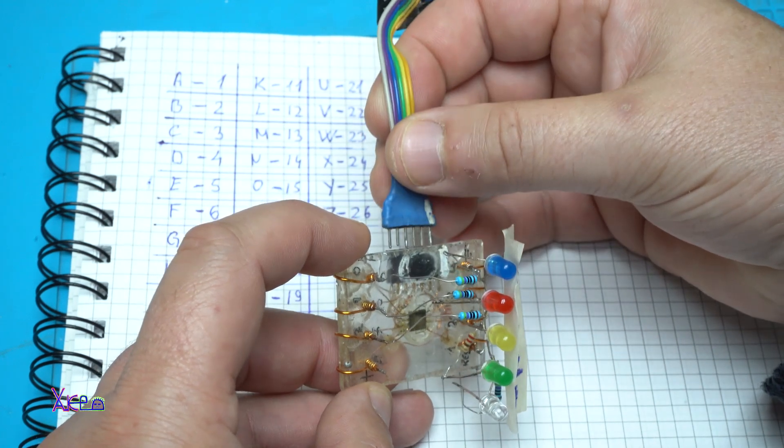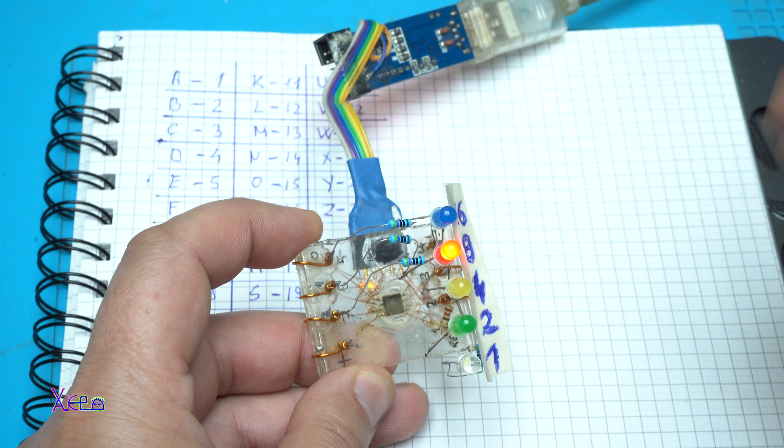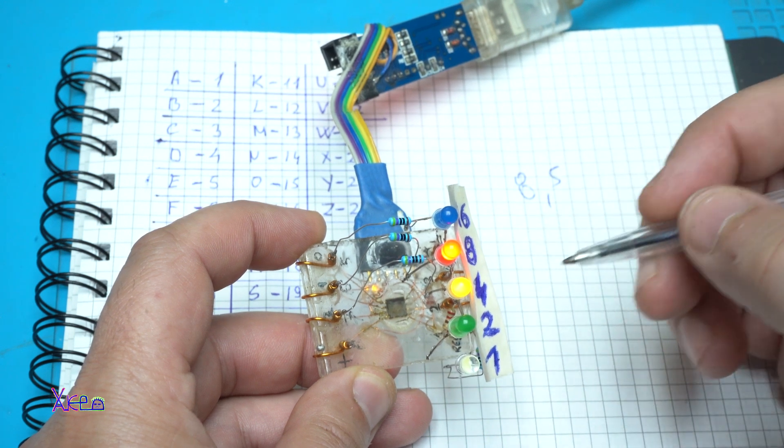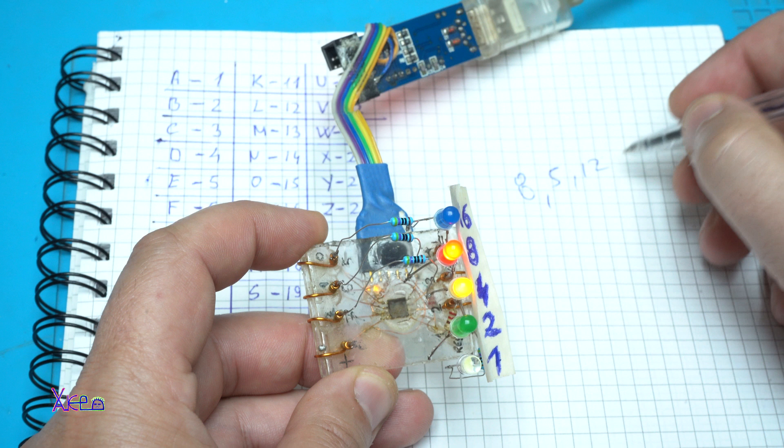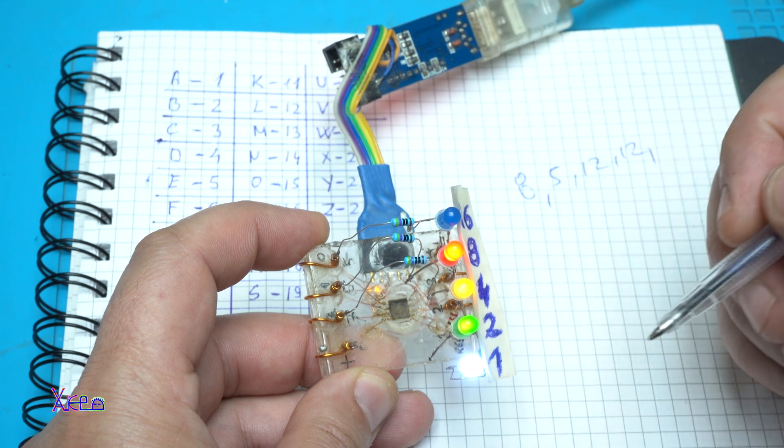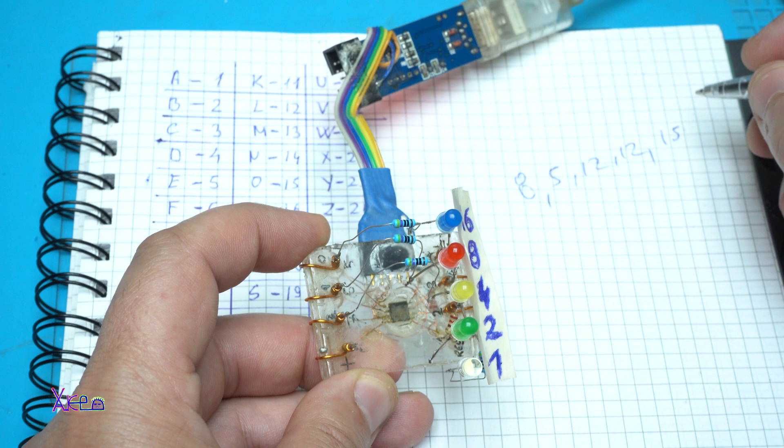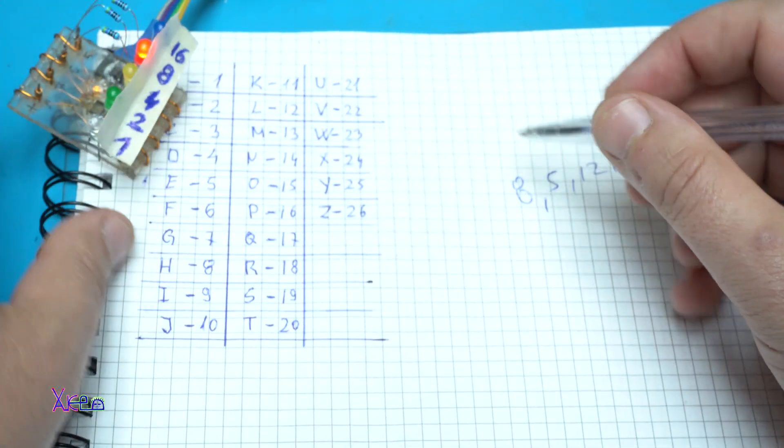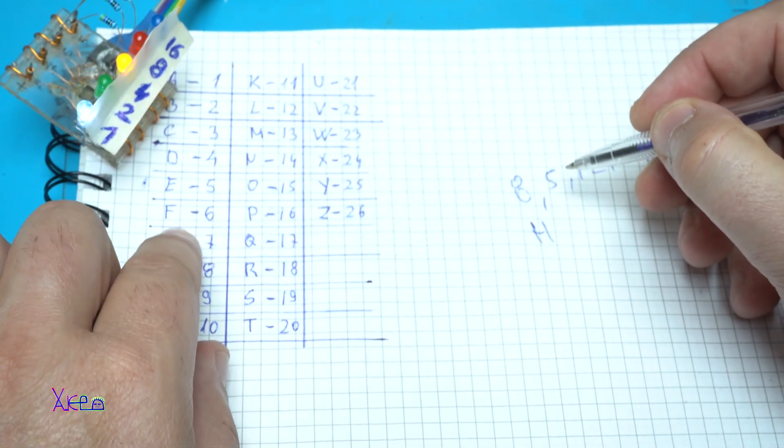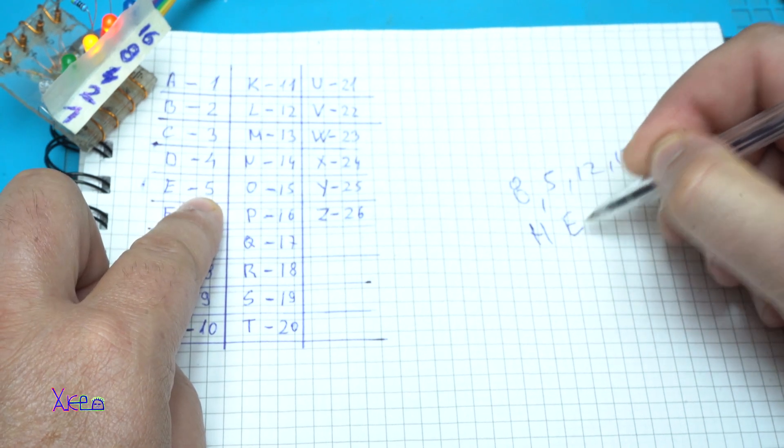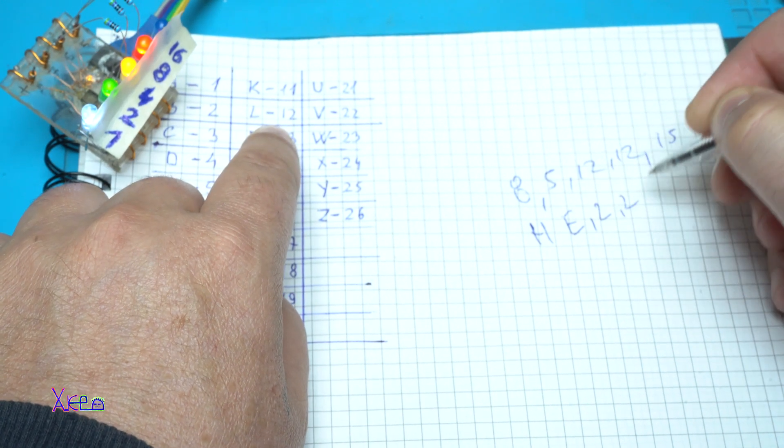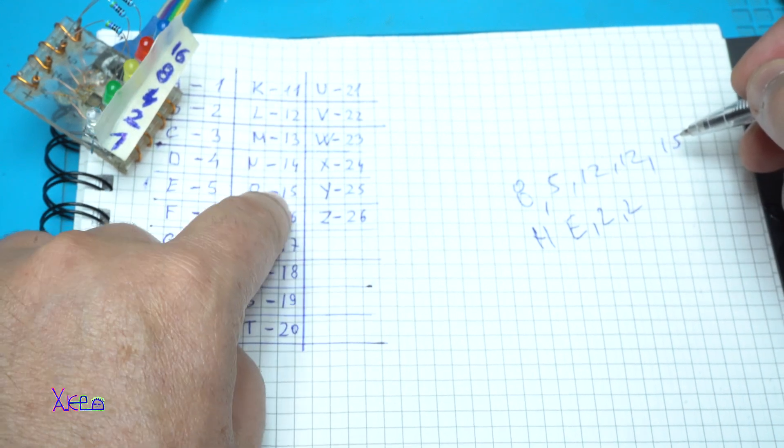I'm gonna power up and see how it works. Eight, four and five is five, eight and four is twelve, twelve again, and eight, four, two, one is fifteen. So eight is H, five is E, twelve is L, twelve is L, and fifteen is O. Hello.